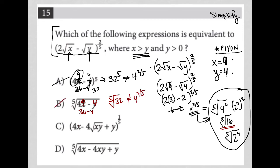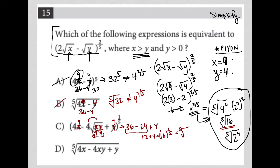For choice C, substituting x=9 and y=4 requires a bit more work. We get 36 minus the square root of 36 times 4, plus 4. The square root of 36 is 6, so that's 36 minus 24 plus 4. That gives us 16 to the 1/5, which is the fifth root of 16 — exactly the same as 4 to the 2/5. So choice C is the correct answer.